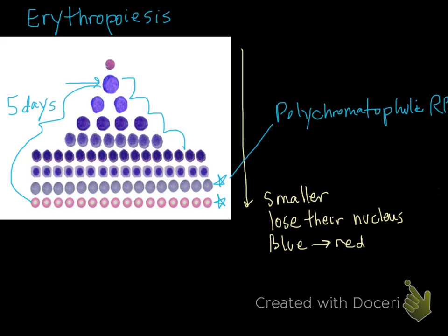These are called polychromatophilic red blood cells because they're blue. Polychromatophilic red blood cells, and their other name are reticulocytes.